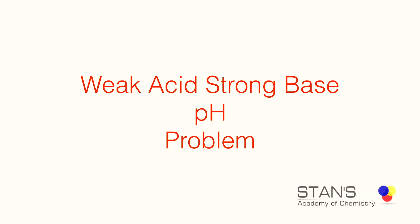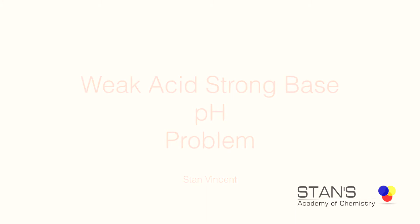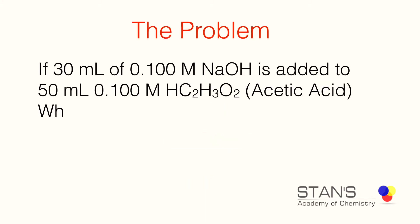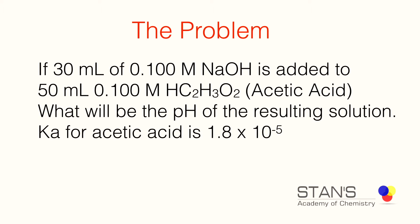In this video we will be determining the pH of a solution obtained by mixing a weak acid with a strong base. Here is a problem: if 30 milliliters of 0.100 moles per liter of sodium hydroxide is added to 50 milliliters of 0.100 moles per liter of acetic acid, what will be the pH of the resulting solution? Ka for acetic acid is 1.8 × 10⁻⁵.